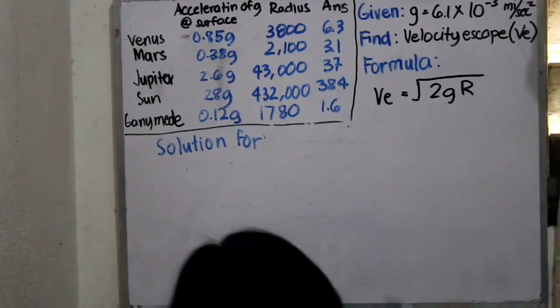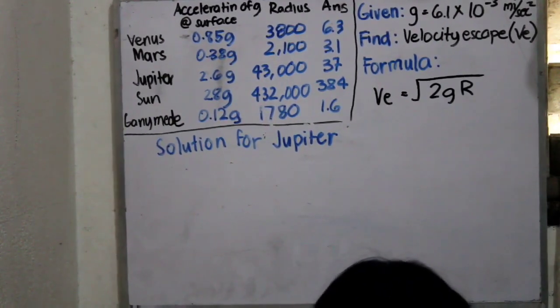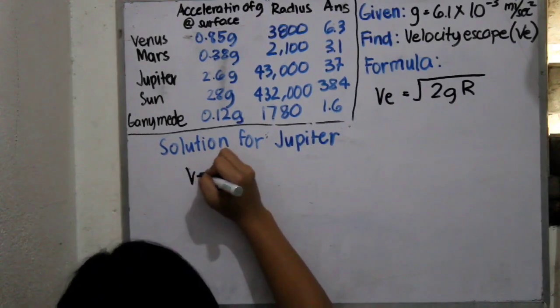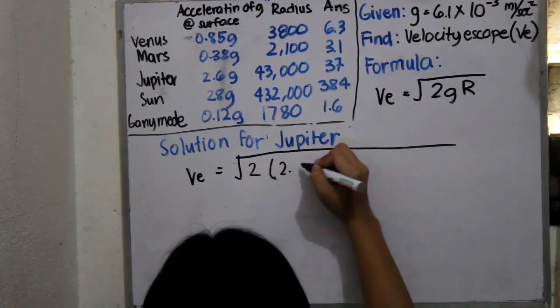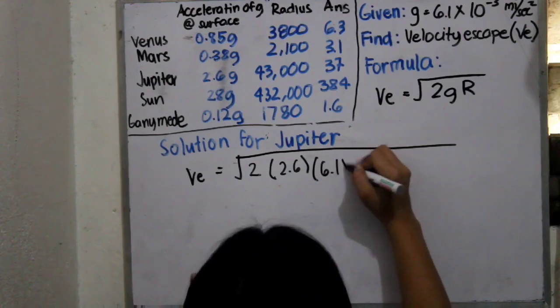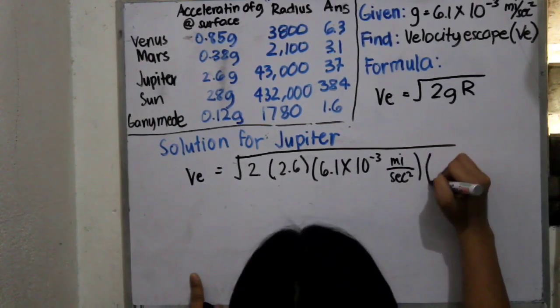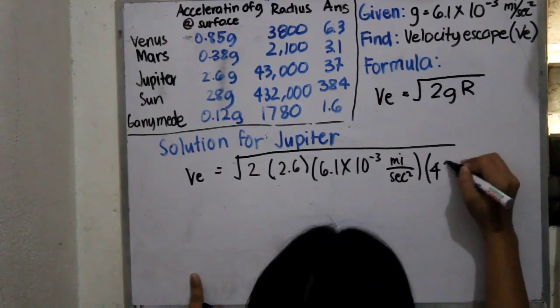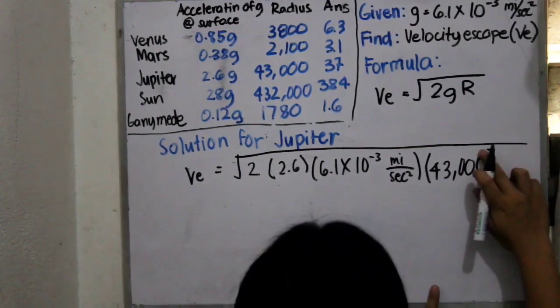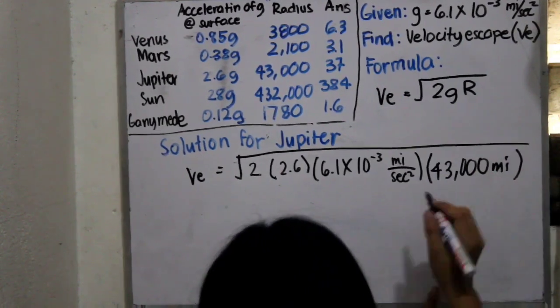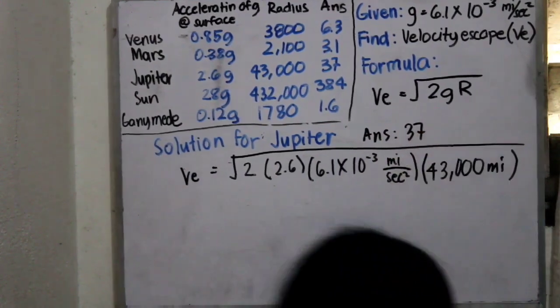Next is our solution for Jupiter. Jupiter as the largest planet, so VE is equals to square root of 2 by 2.6 by 6.1 times 10 raised to negative 3 miles per second squared, multiplied by the radius, which is 43,000 miles. So, same as before, we will be left with miles per second. And our answer should be 37.